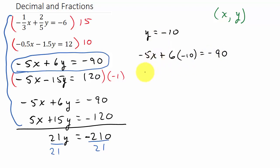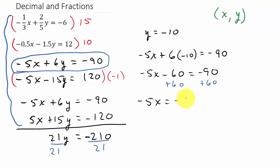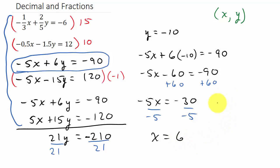Now I solve this. I've got negative 5x minus 60 equals negative 90. I'm going to add 60 to both sides, giving negative 5x equals negative 30. Then dividing both sides by negative 5 gives me x equals 6. So when we write our solution in the form (x, y): x is 6, y is negative 10. There's our solution.